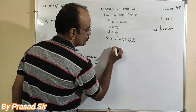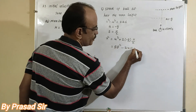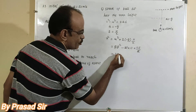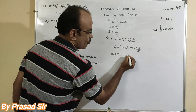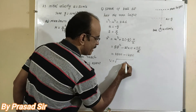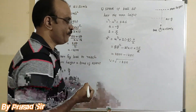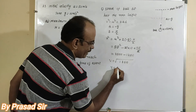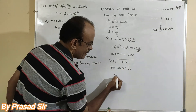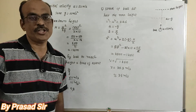Substituting values: v squared equals 50 squared minus 2 into 10 into 125 divided by 2. The 2s cancel, giving v squared equals 2500 minus 1250, which equals 1250. Taking the square root, v equals approximately 35.3 meters per second, or nearly 35 meters per second. This is the solution for question number 23.